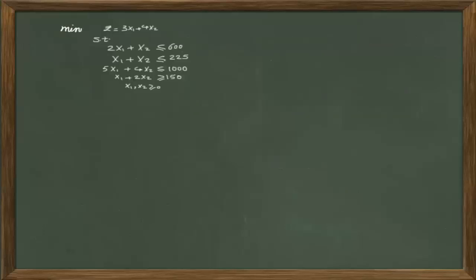Consider a linear programming problem as shown on the screen. We have the option of choosing the two-phase or big M method to solve this problem. Another alternative is the dual simplex method. In the dual simplex method, we are trying to solve the dual problem instead of the initial problem, because the value of a primal problem and its dual programming is the same at the optimal point. So instead of solving the primal problem, we have the option of solving its dual problem.